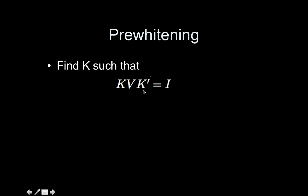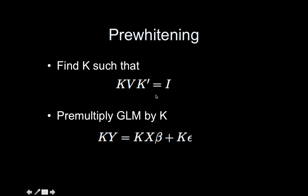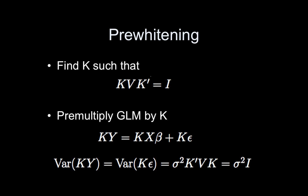The goal is to find matrix K such that K V K-transpose equals the identity, then pre-multiply our GLM by K. So Y is replaced by KY, the design matrix X is replaced by KX, and the error term becomes K epsilon. Whenever you apply any transformation to the left-hand side of the GLM, you must also apply it to the right-hand side. The variance of KY then equals K-transpose V K, which — by our choice of K — comes out to the identity.